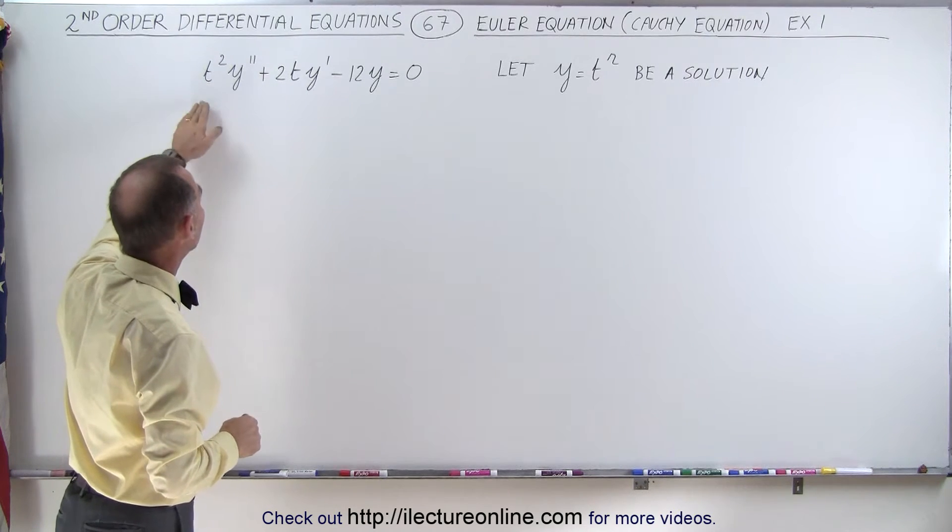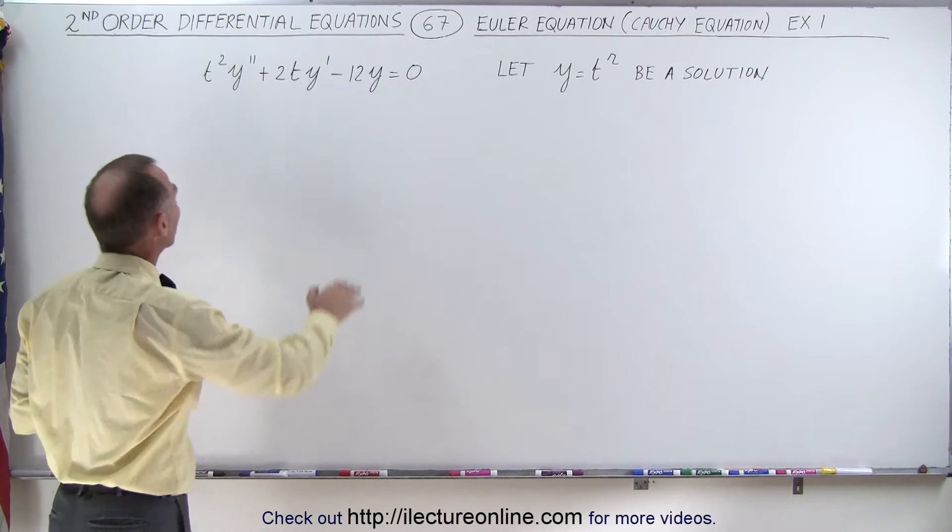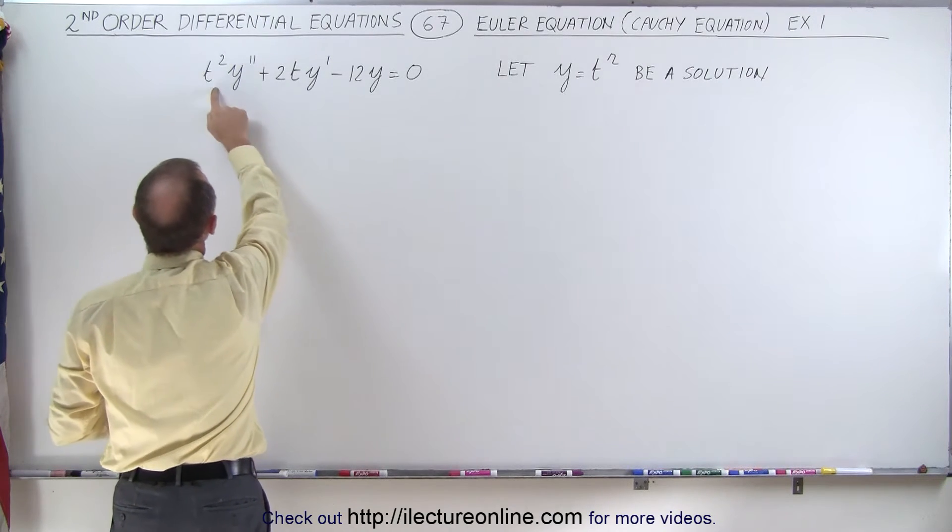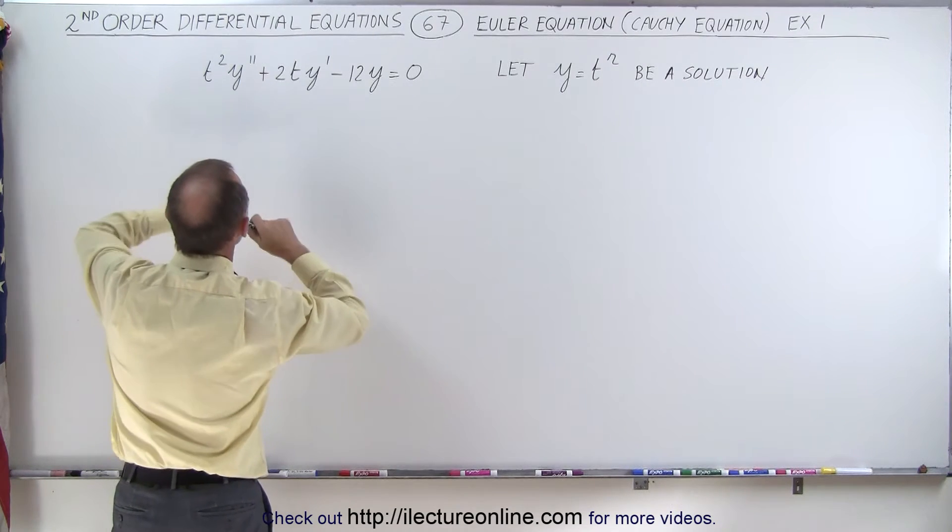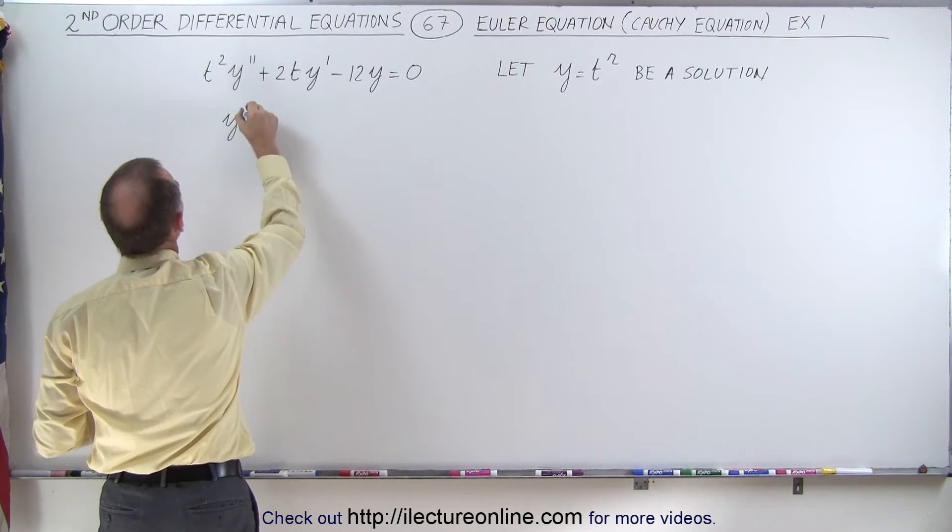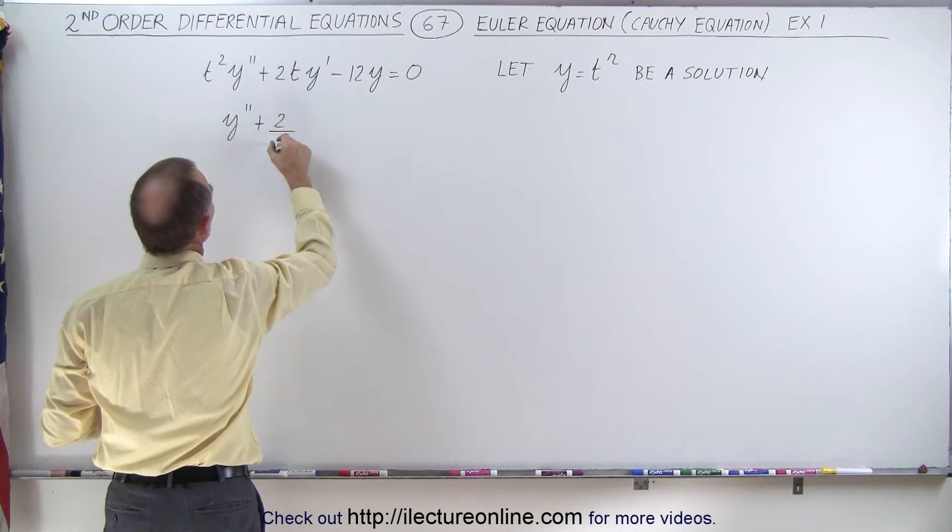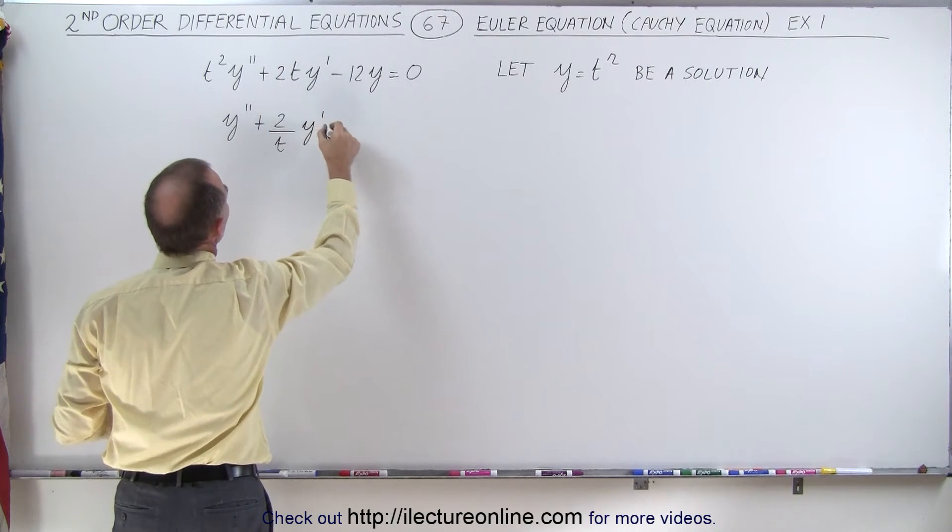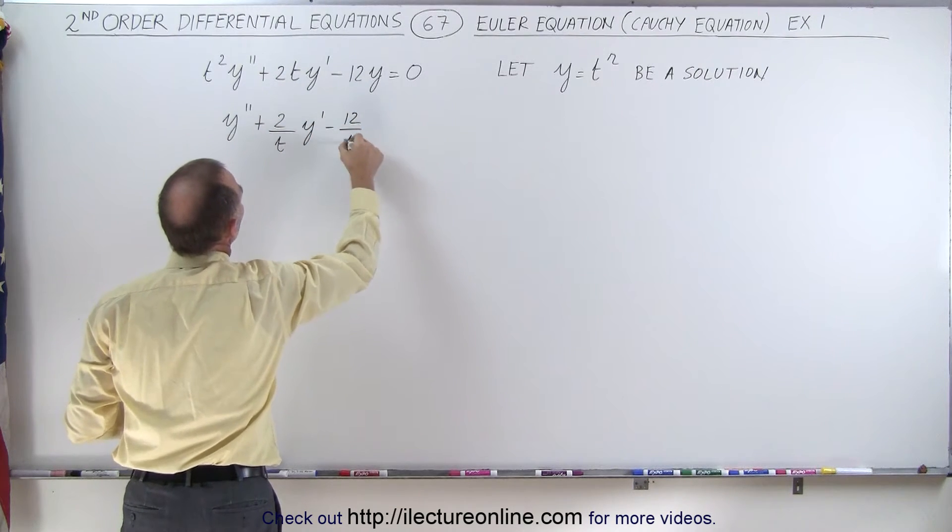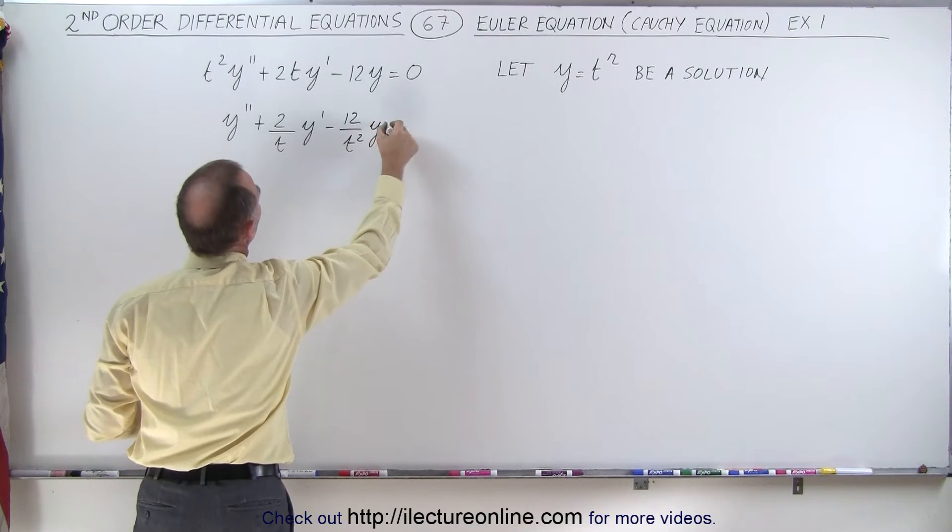First of all, we want to put this into the standard format, so we're going to divide everything by the coefficient in front of the y double prime term. So this becomes y'' + (2/t)y' - (12/t²)y = 0.